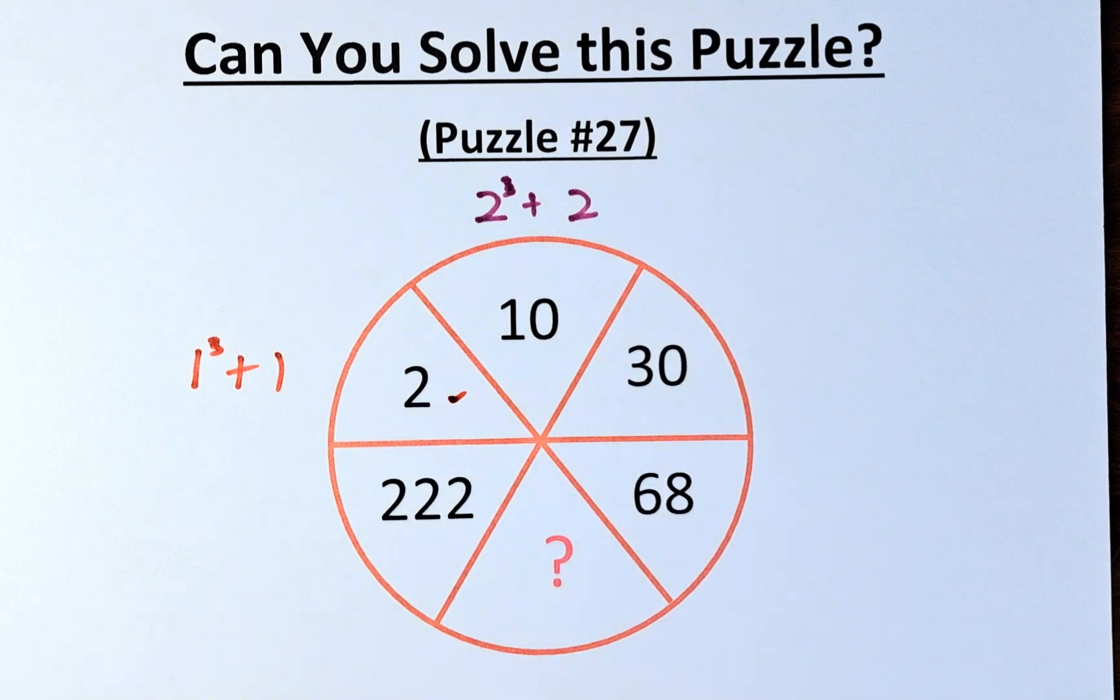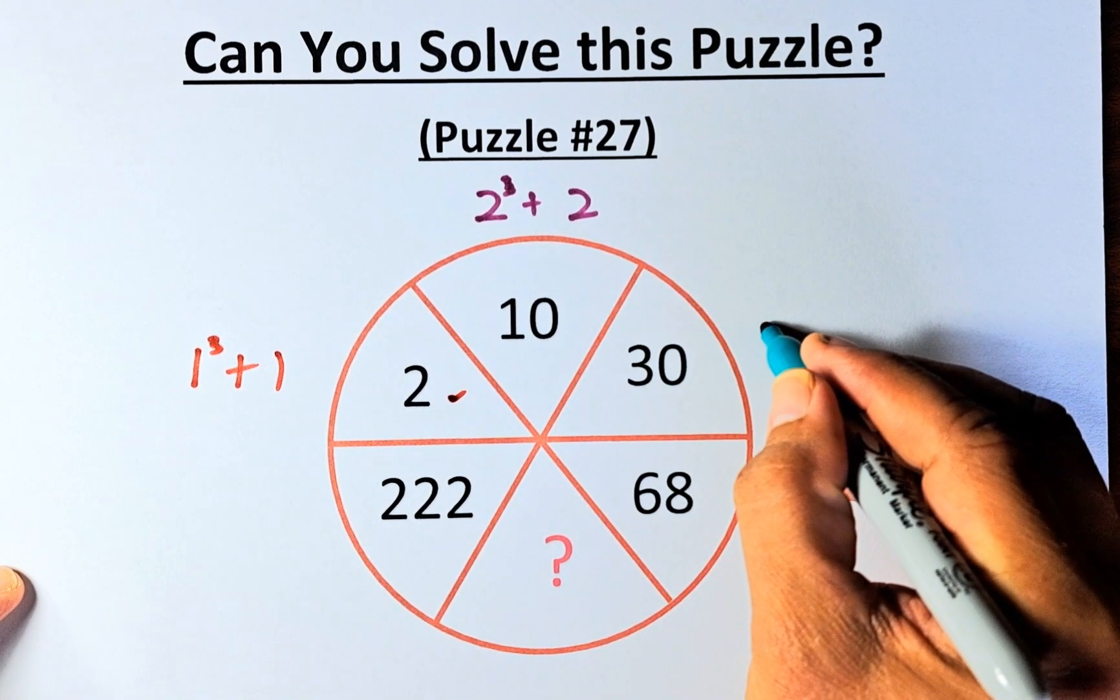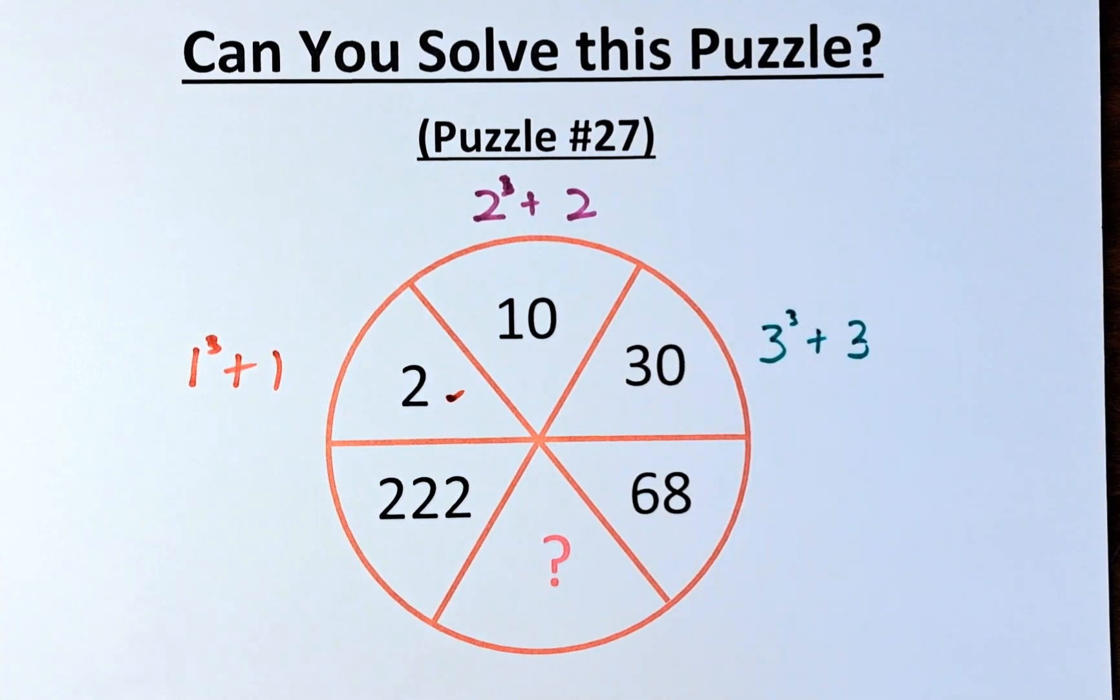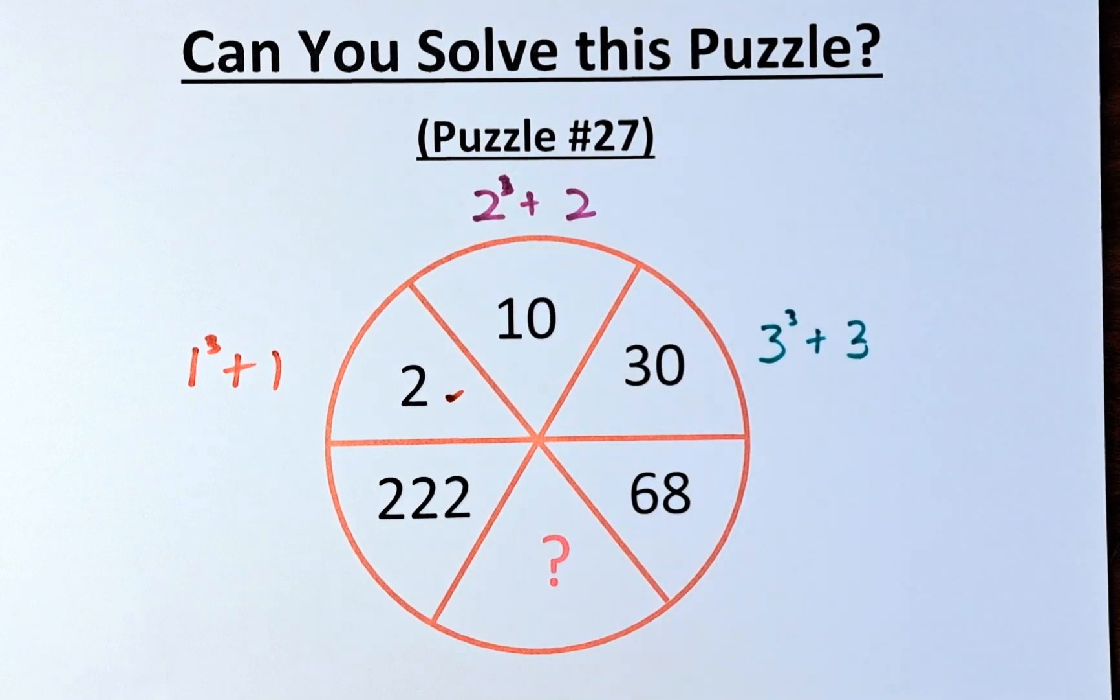The next number is 30. You can roughly guess the idea now. 30 is the same as 3 cube plus 3. 3 cube is 27. 27 plus 3 will give us 30.